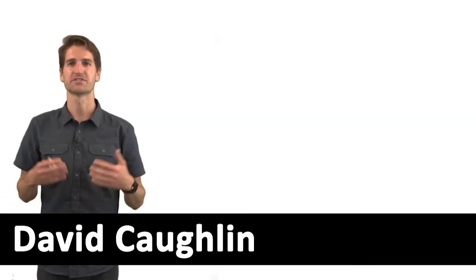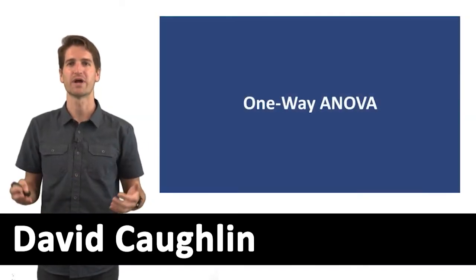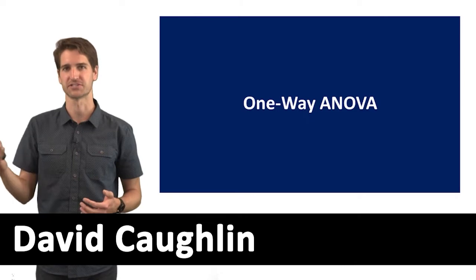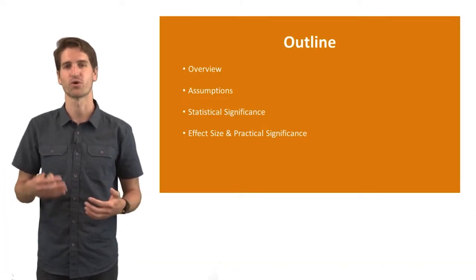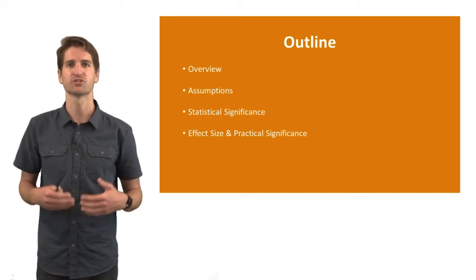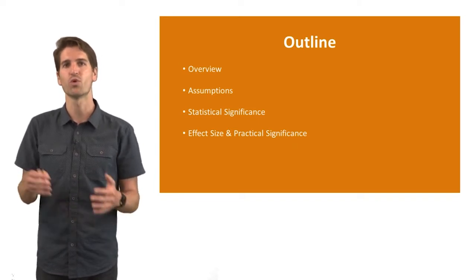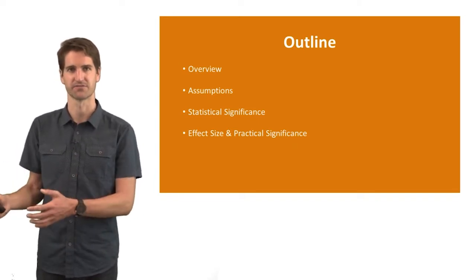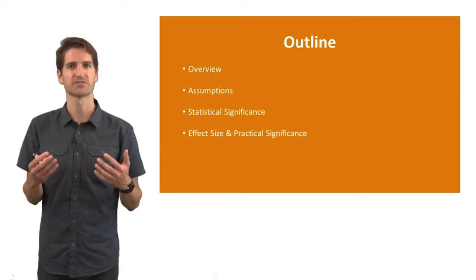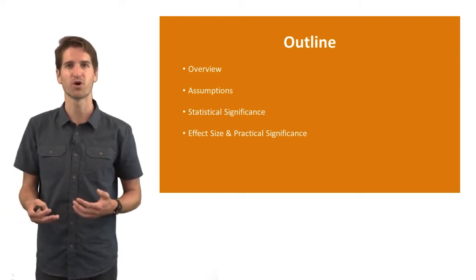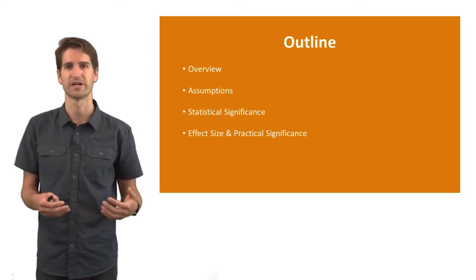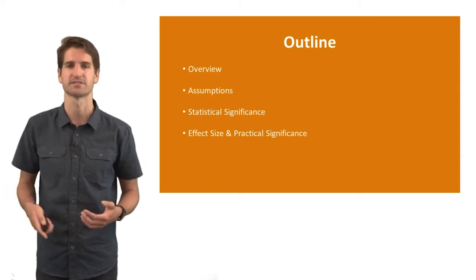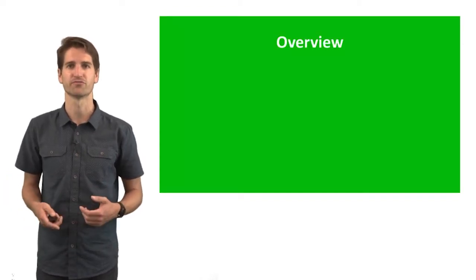In this lecture, we're going to discuss a one-way ANOVA or a one-way analysis of variance. We'll start with an overview of what analysis of variance or ANOVA actually means, then describe in more detail what a one-way ANOVA is. We'll talk about the statistical assumptions underlying a one-way ANOVA, and finish up by discussing statistical significance and practical significance in that context.